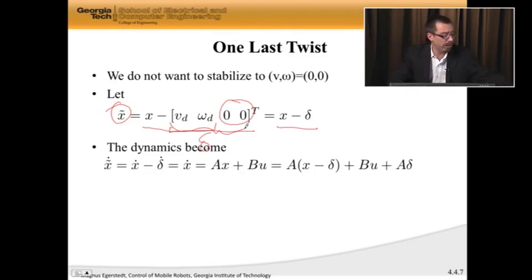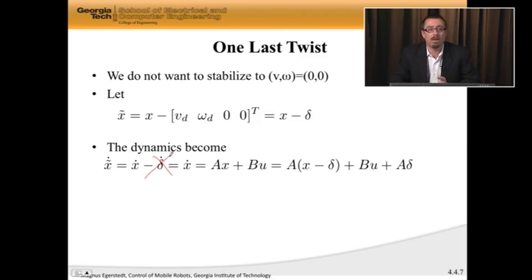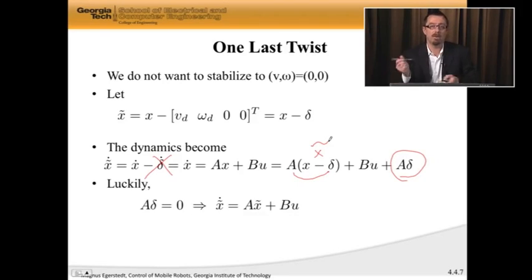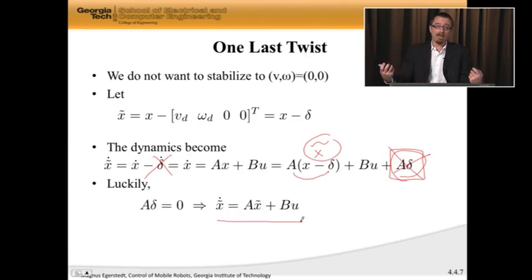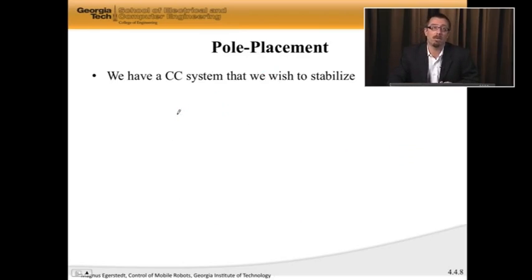So I have a new state. What's the dynamics of the new state? Well, x tilde dot is x dot minus delta dot. Delta is constant, so this is 0. So it's just x dot. So it's Ax plus Bu. I can add a minus A delta and add in an A delta at the end, because then I have x tilde again here. So if I do that, I get a new system. And here is the lucky part for us. A times delta turns out to be equal to 0, because of the structure of A. So my new system dynamics is the same as my old system dynamics. x tilde dot is A x tilde plus Bu. And now I want to stabilize this system down to the origin, which means that the velocities are actually going to end up being equal to the desired velocities.